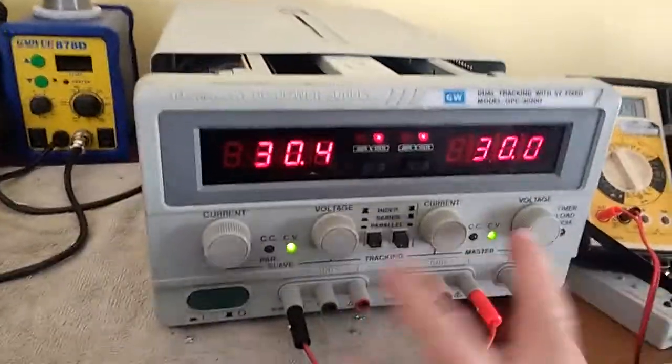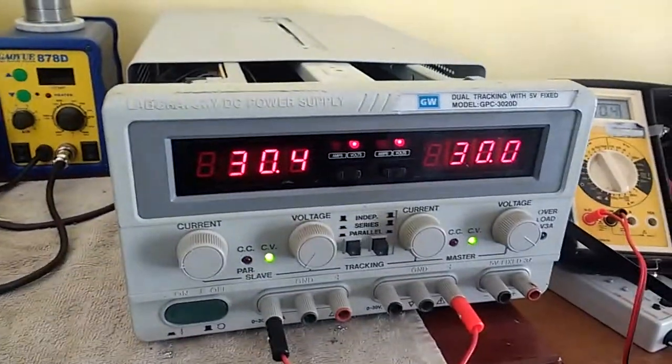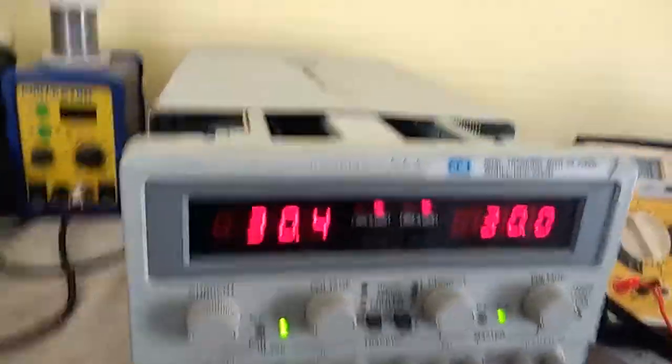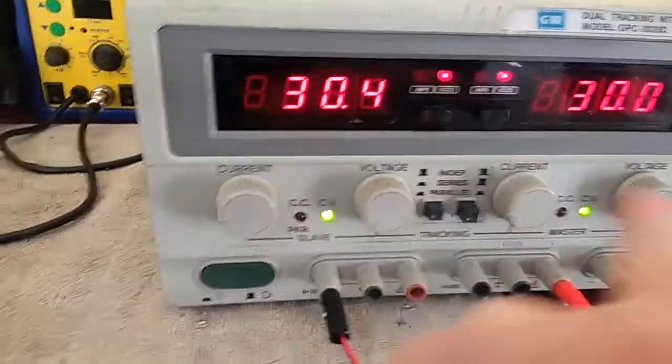The voltage pots are 10K, and the current sense pots are 2K, I think. Or was it 1K? I think it was 2K, anyway. So 10 and 1 or 10 and 2.